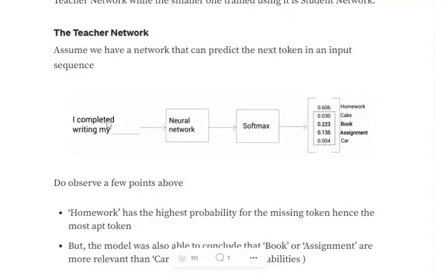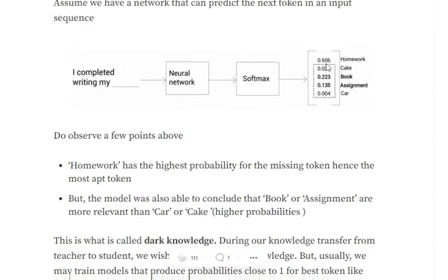What we are trying to do is transfer whatever a big network has learned — for example GPT or BERT — into a small network called the student network. The bigger network that has learned everything becomes our teacher network, and a smaller network becomes the student network. For example, take a sequence prediction task using a BERT model: we apply a softmax and get 'homework' as the most suitable output token given the input 'I completed writing my ___'. Looking closely, you can see that though 'homework' is the most apt token, the second most apt token is 'book' — its probability is much greater than that of 'car' or 'cake'.